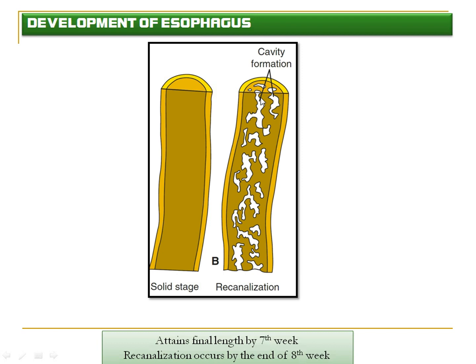As development continues, the endodermal epithelium proliferates rapidly and obliterates the lumen of the esophagus. Later, vacuoles form in the obliterated lumen, fuse with each other, and recanalization reopens the lumen of the gut tube. This recanalization is complete by the end of the eighth week. The esophagus attains appropriate length by the seventh week, supported by the developing heart and lungs.